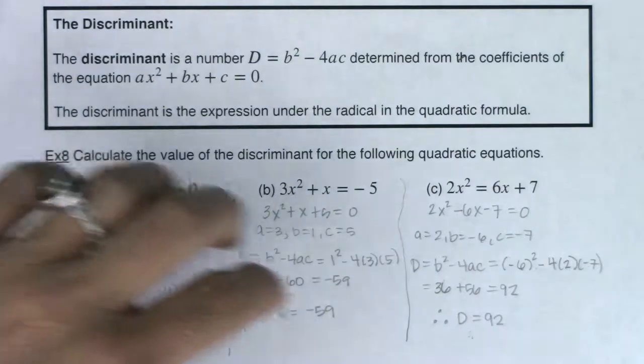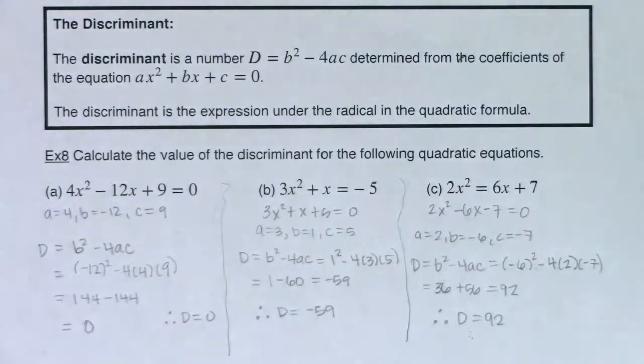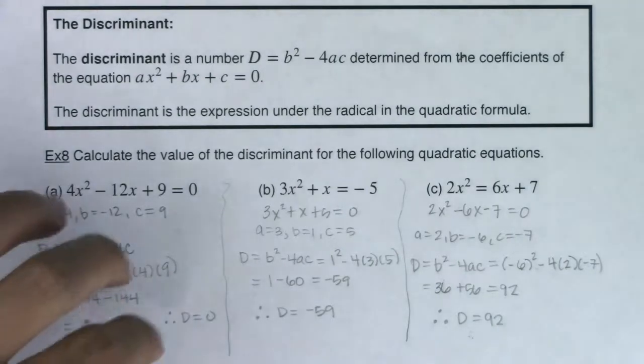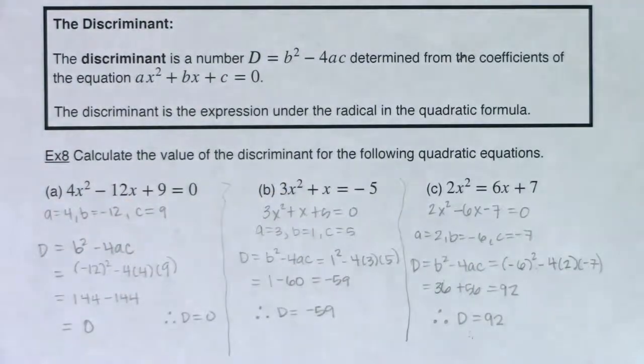And those three types of discriminants are going to get played out in example 9. They tell us different information about the number and types of solutions we have to each of these quadratic equations. So let's take a look at example 9, and I will see you in a bit. Bye.